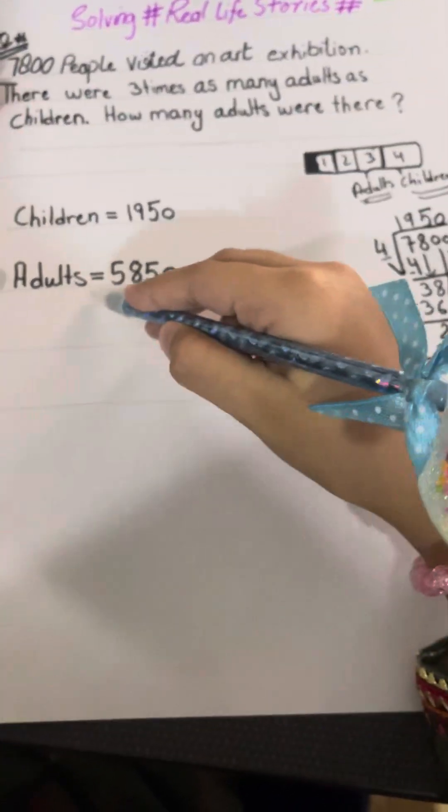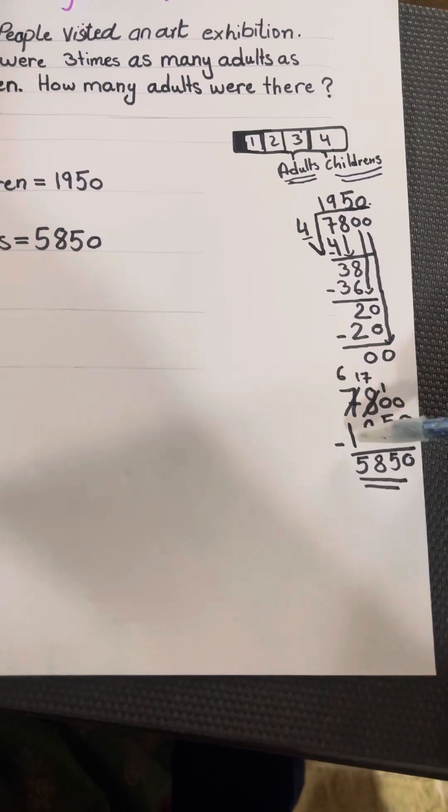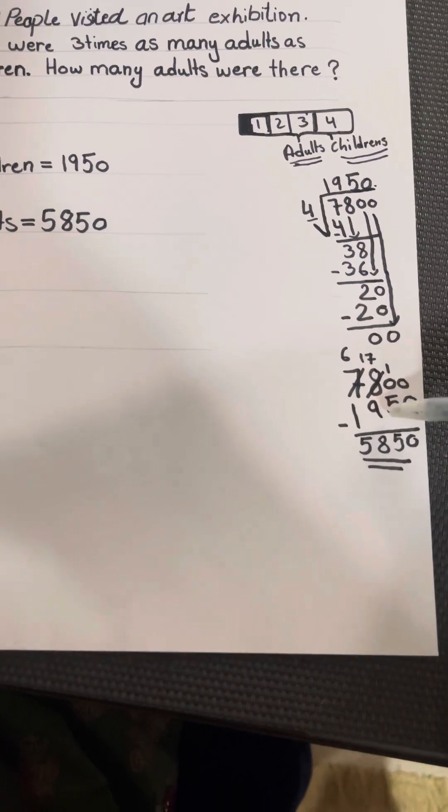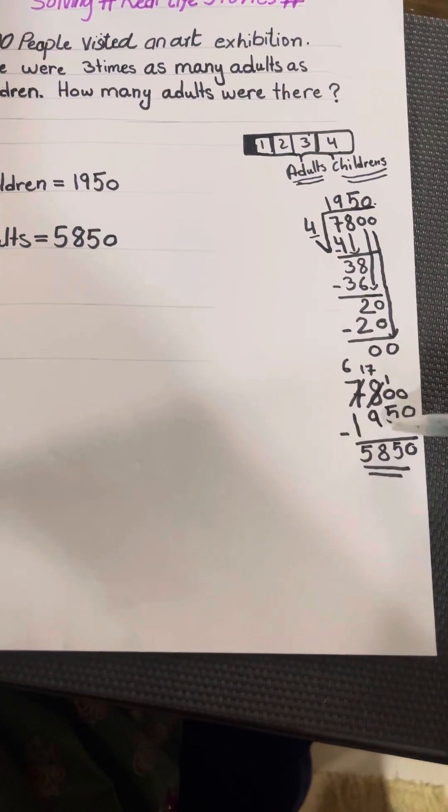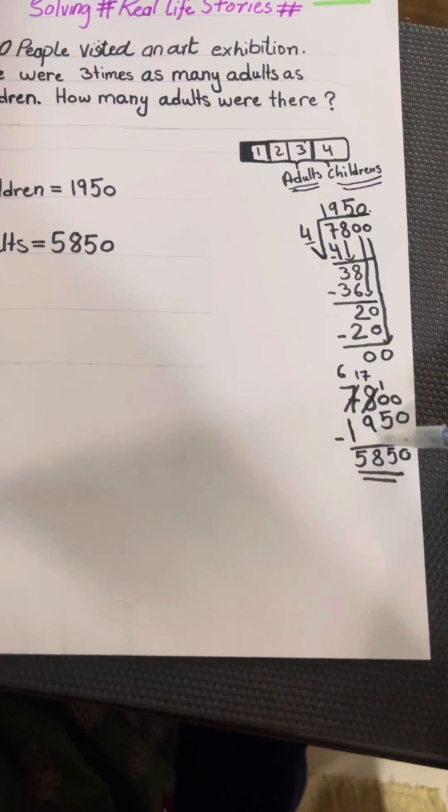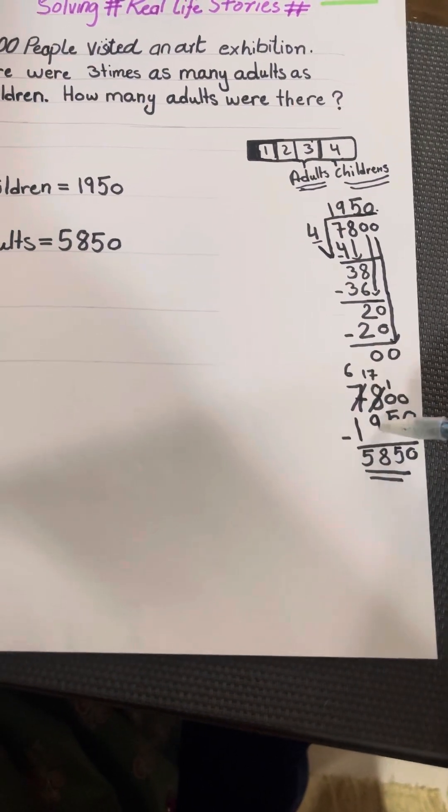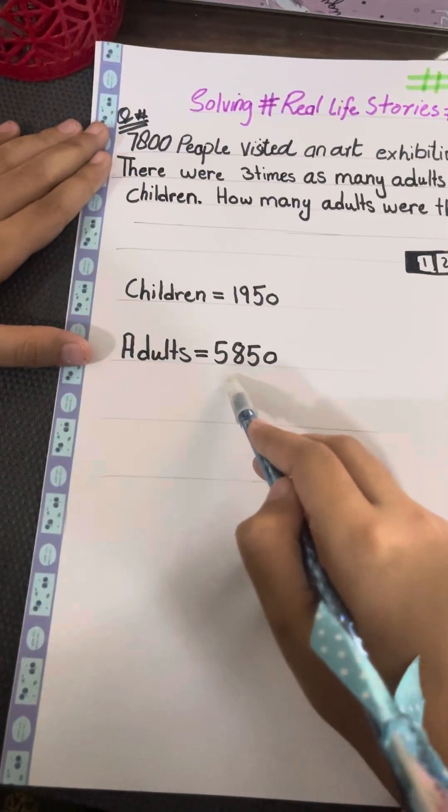Now we're going to find the adults. It's 7,800 minus 1,950. 0 minus 0 is 0. We can't do 0 minus 5, so carry 1. 10 minus 5 is 5. 17 minus 9 is 8. 6 minus 1 is 5. So there are 5,850 adults.